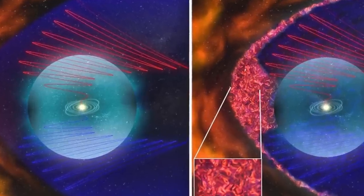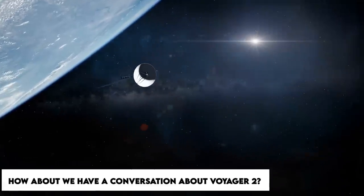Stone insisted that the magnetic field's direction change was still inevitable. However, he did say that he anticipated some aspects to be kept secret. How about we have a conversation about Voyager 2?